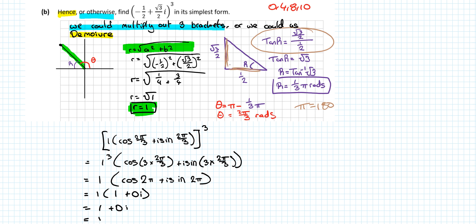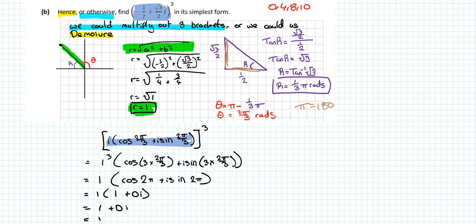We work out the reference angle by going opposite over adjacent, so tan is opposite over adjacent, and we take the inverse tan of root three — all of this simplifies down to root three. So the reference angle is pi over three. We find theta by subtracting it from pi, giving us two pi over three. Now we know the modulus and the argument, so we can write this complex number in polar form as cos theta plus i sine theta, raised to the power of three.